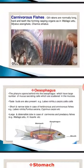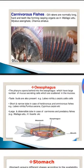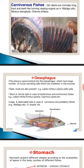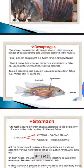Coming to the esophagus: the pharynx opens into it from behind. The esophagus has a large number of mucus-secreting cells scattered in the mucosa. Taste buds are also present, for example in Labeo rohita and Catla catla. It is a short and narrow tube in herbivorous and omnivorous fishes such as Labeo, Puntius serana, and Cyprinus carpio. A large and distensible tube is seen in carnivorous and predatory fishes such as Wallago attu and Heteropneustes fossilis.